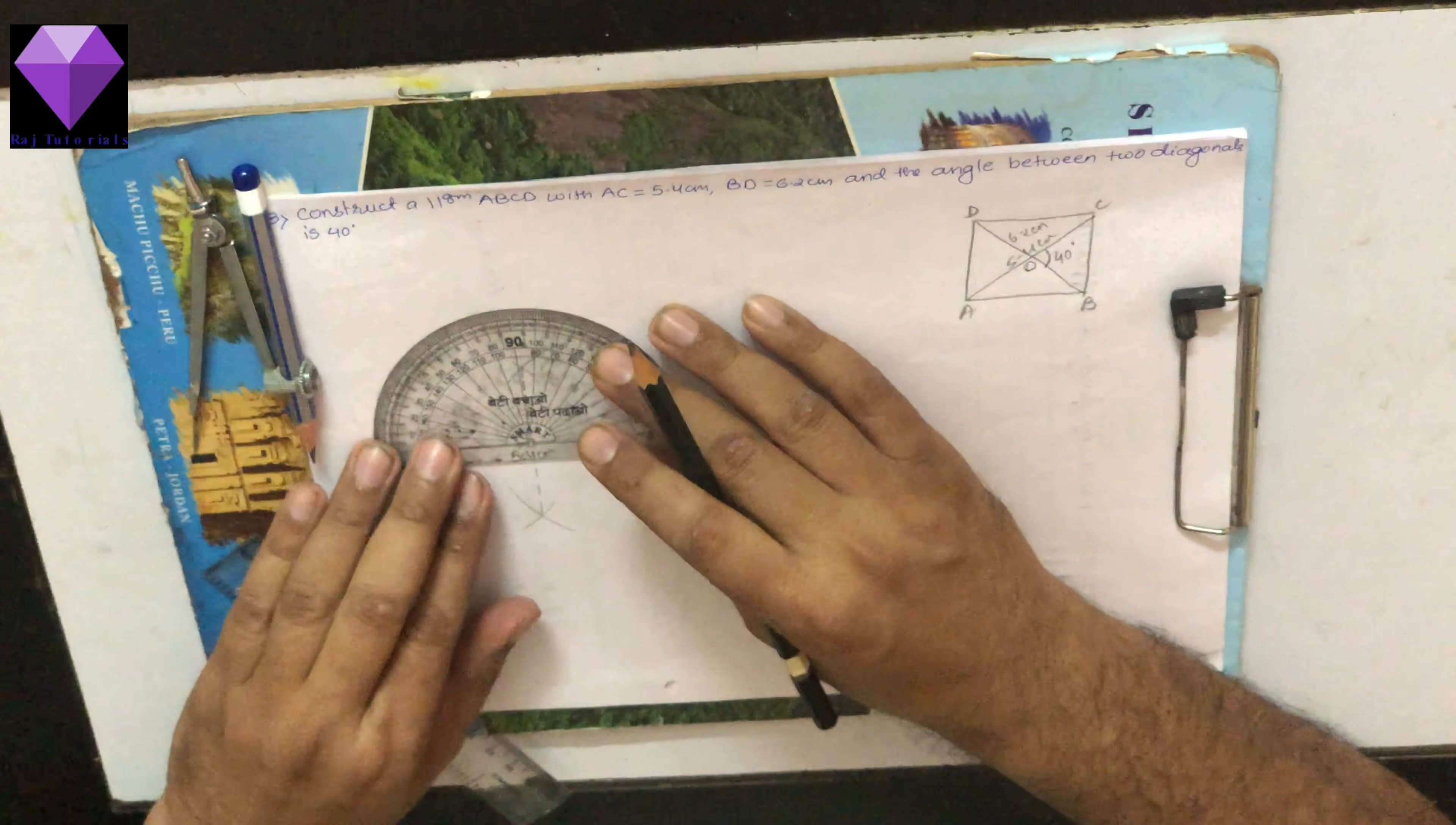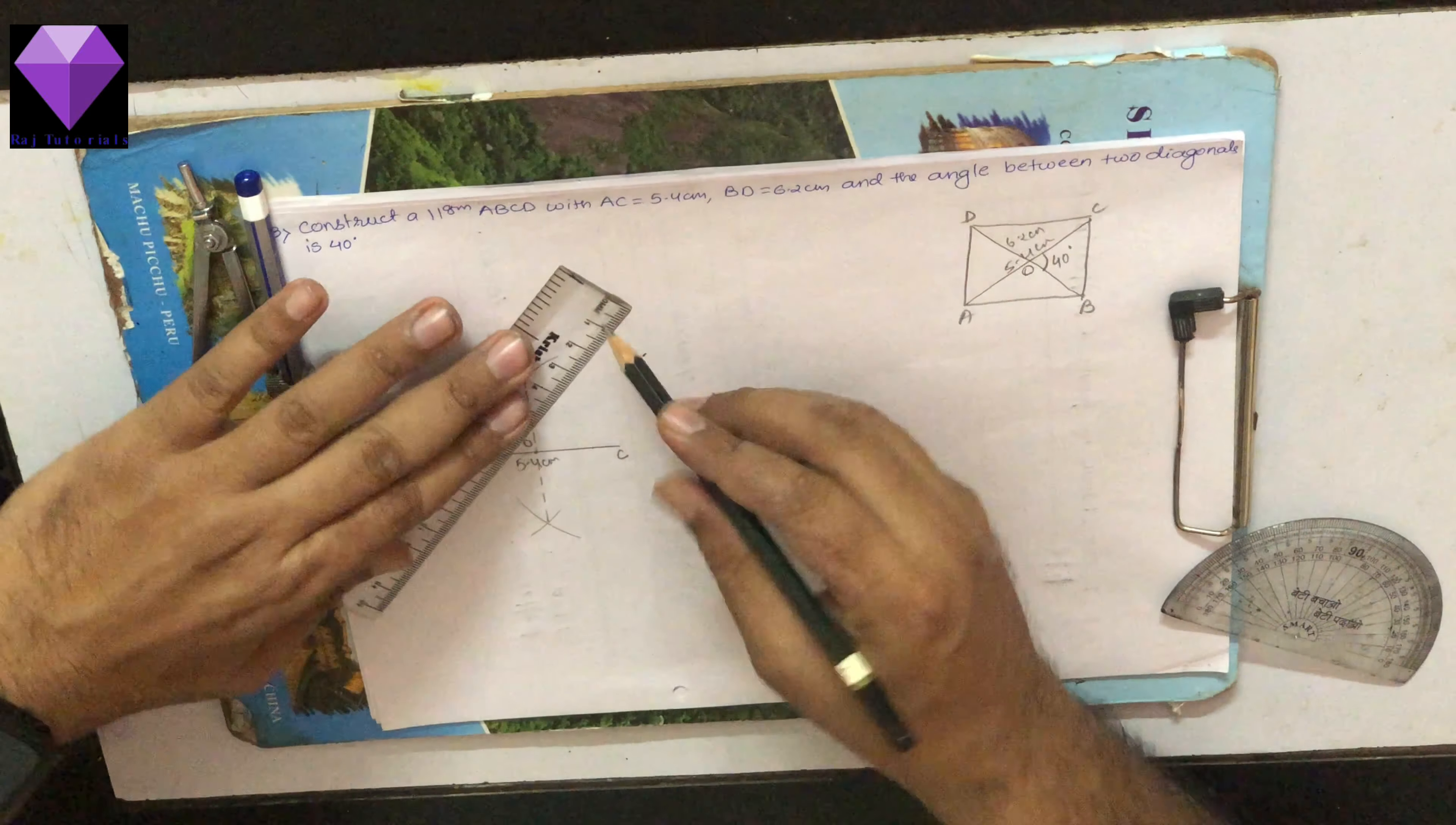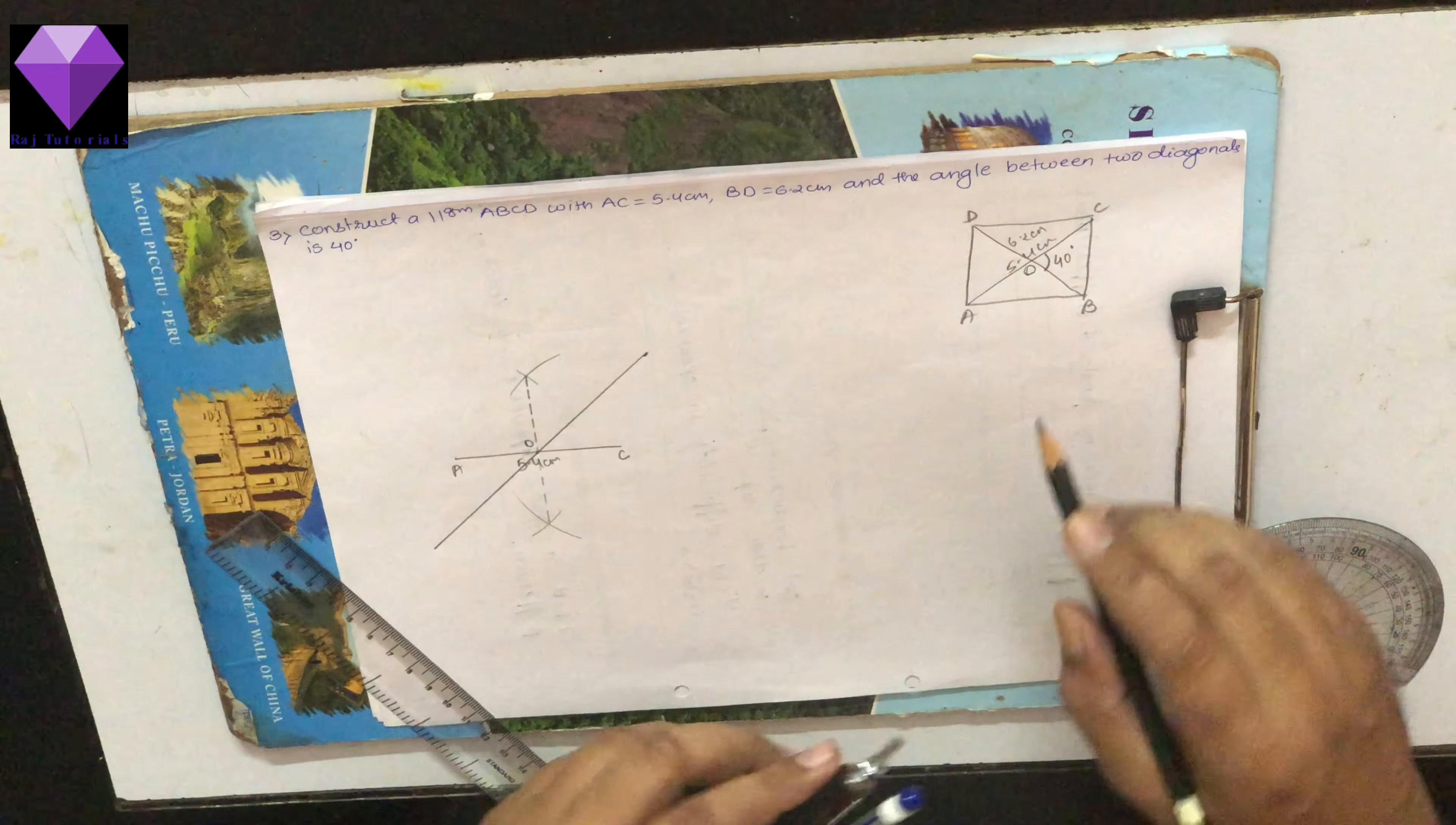So first with center O and keeping the 40 degree angle, I am measuring one line or I have made one point and I am joining with O and elongating that. Now we know that in a parallelogram the diagonals bisect each other.